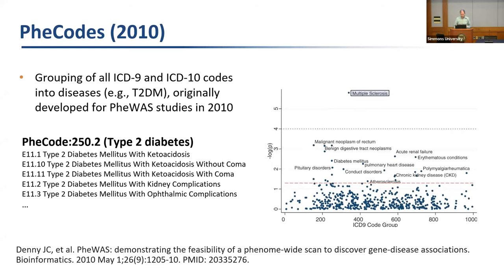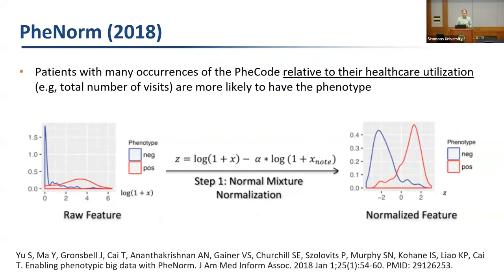PheNorm, which Sean mentioned, works on the principle that more diagnoses likely mean the patient has that condition, but normalized relative to healthcare utilization. For example, three diabetes visits out of five is probably diabetes, but three out of 100 is less likely. When you look at the distribution of condition occurrence counts, there are two underlying populations: a red population that truly has the condition, and a blue population randomly assigned that code due to typos or billing errors. Normalizing by healthcare utilization produces two clean Gaussian curves that are easier to separate.